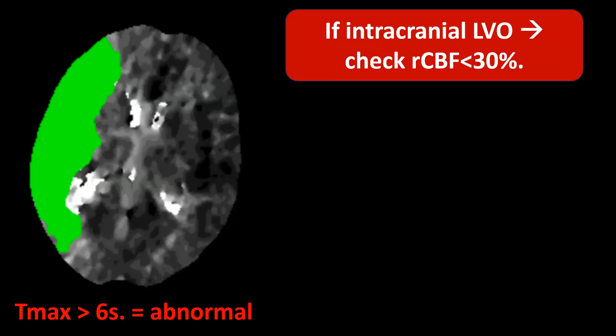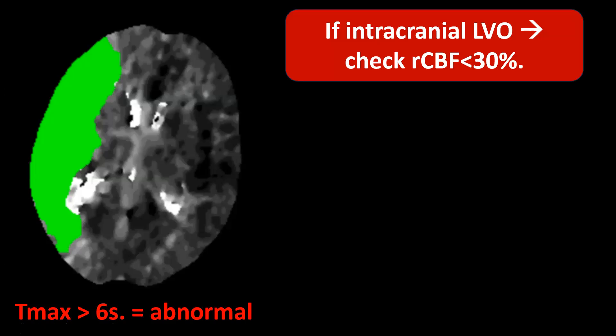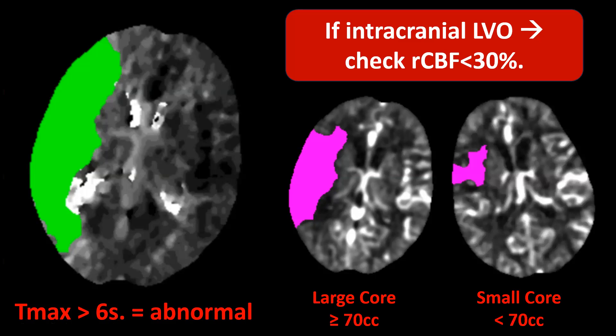Now imagine the patient does have a large vessel occlusion — such as an occlusion of the right middle cerebral artery — and Tmax >6 seconds is clearly abnormal. We should check our relative CBF map (CBF lower than 30% compared to the contralateral normal hemisphere) to try to identify an ischemic core. Once we've identified an ischemic core, we need to determine its size.